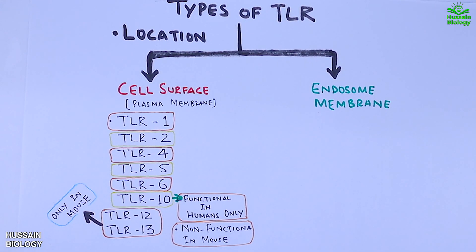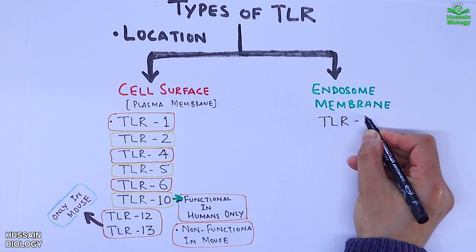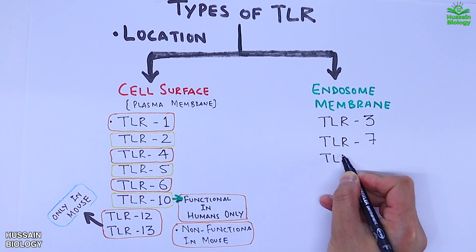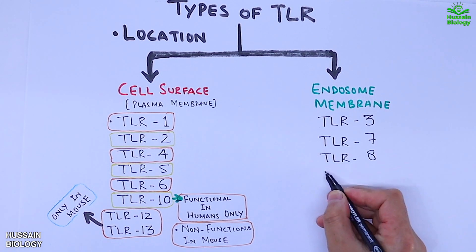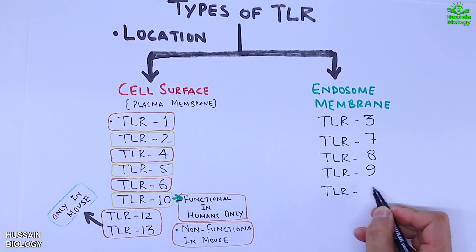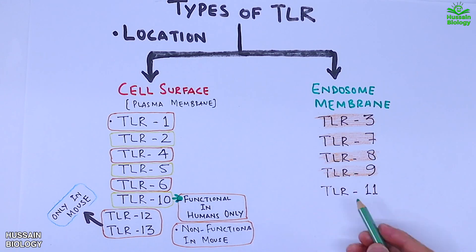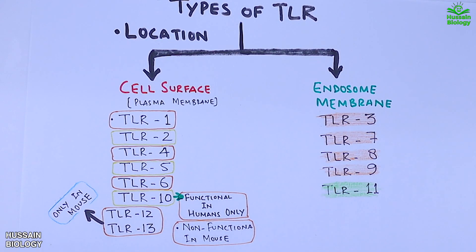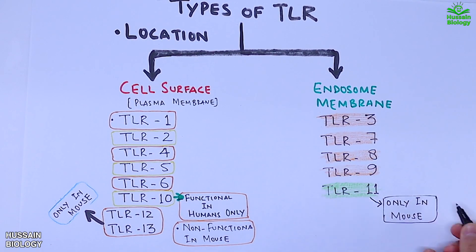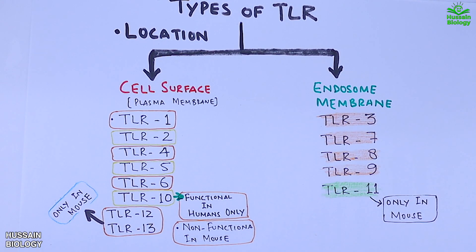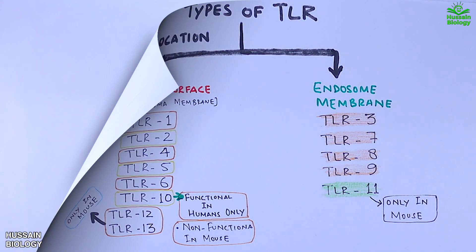On the other hand, we have endosomal TLR molecules: TLR3, TLR7, TLR8, TLR9, and TLR11. TLR11 is only present in mouse. Now let's jump toward the TLR dimers and their ligands from pathogens.